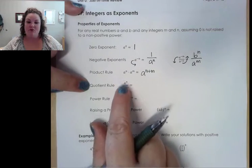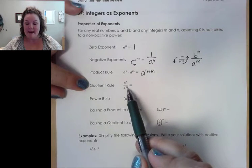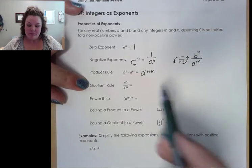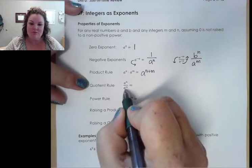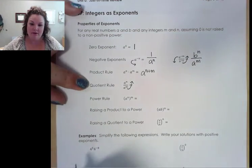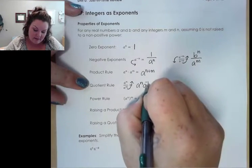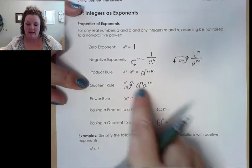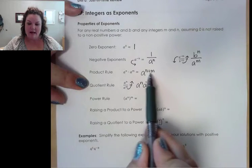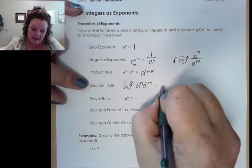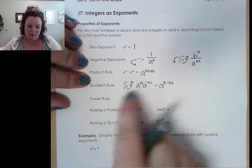Quotient rule says that we can subtract the exponents. We could write this as a to the n minus m, but I want to show you an intermediate step as to why. If I use this idea that I can move things across the fraction line to change the sign, and I wanted to collect all of the a terms up in the numerator — if I move this one up, it becomes a to the negative m. Because if I move it across the fraction line, it changes the sign of the exponent. And now I can just use the product rule: as long as I have the same bases being multiplied, I can combine their powers. So that's why with quotient rule we can just subtract — we're moving the bottom one up.